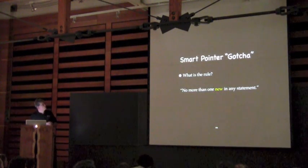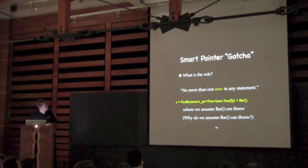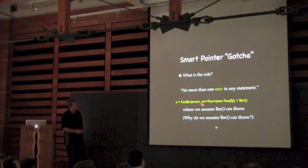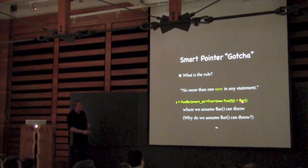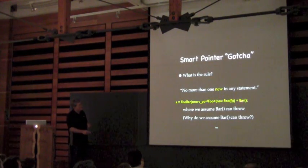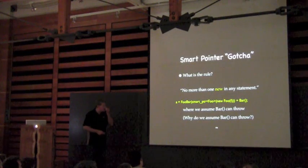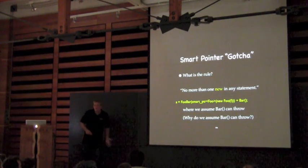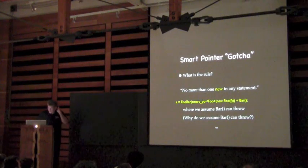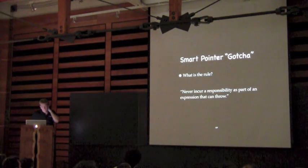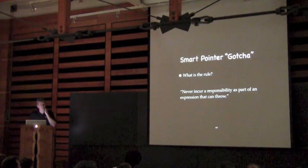So what's our rule? How about no more than one new in any statement? Well, the problem is it's not really the new that's the problem — you could have an expression with only one new but do something else that also acquires a responsibility. We assume bar can throw because we always assume something can throw unless we know different. So that rule won't work.